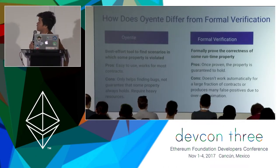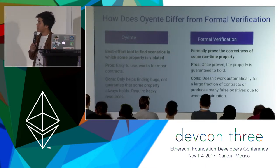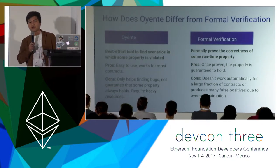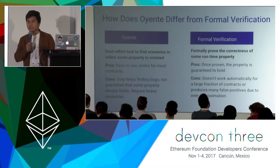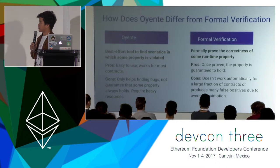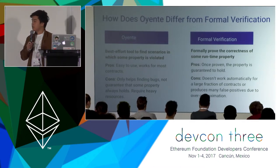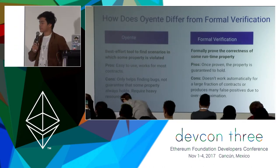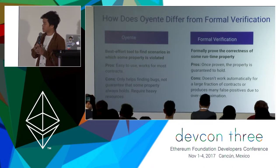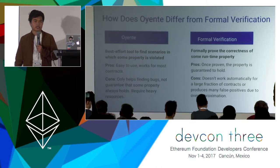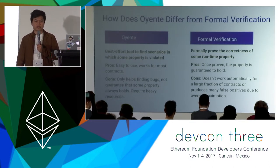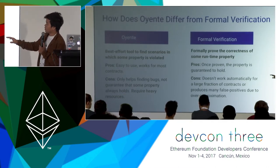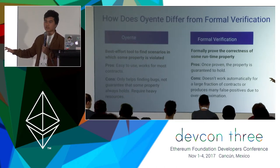What is the main difference between Oriente and other formal verification techniques? Oriente basically tries to find all the possible paths in the program and see whether some bug or property is violated. Formal verification, on the other hand, allows you to formally prove the correctness of some runtime property of your contract or program. Oriente doesn't guarantee the absence of some bug — it will say how many paths it has checked and list the bugs it found. On the other hand, Oriente is easy to use and works for most existing smart contracts. Formal verification sometimes doesn't work automatically — it may require people to configure the program and run it with the tool.